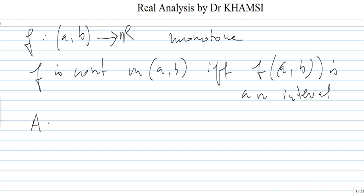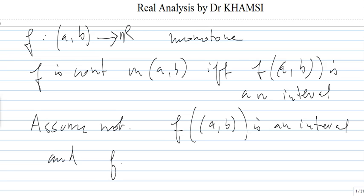Assume not. Meaning what? That there exists x0. So, assume not means what? First of all, what are we trying to - so assume not, meaning that F((a,b)) is an interval, but F is not continuous on (a,b).